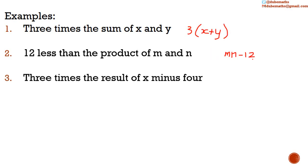A third example. Three times the result of x minus four. x subtract four. Then we have three times the result of this. So, it's three multiplied by the result of x minus four. Again, we omit the multiplication sign.